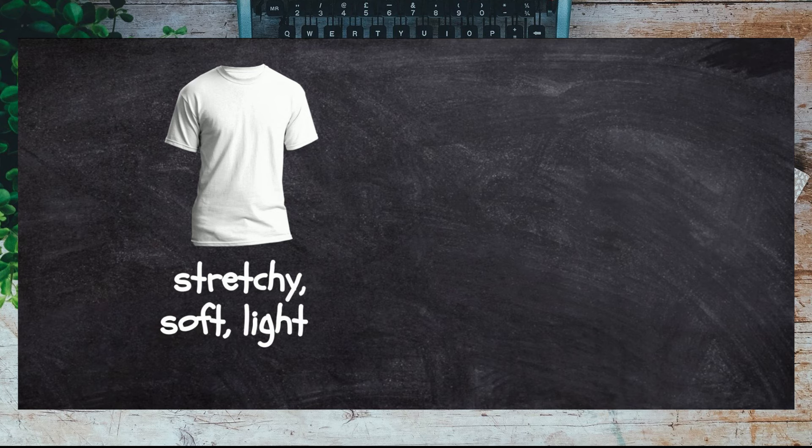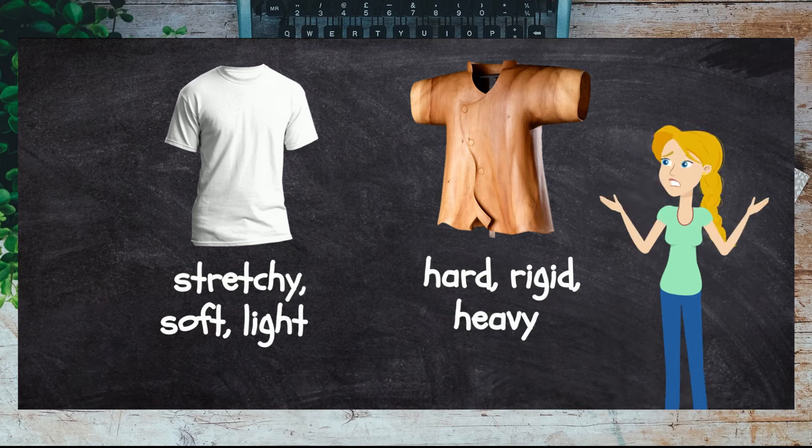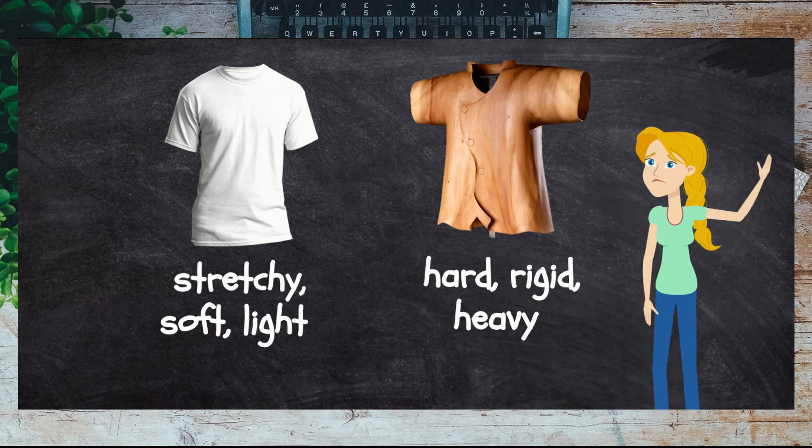Take this t-shirt for example. It's made out of fabric because fabric is stretchy, soft, and light, which makes it suitable to be worn. If a shirt was made out of wood, it would be hard, rigid, and heavy. Would this be very comfortable? No.